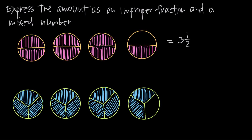I can also express the amount of pie I have as an improper fraction. An improper fraction is a single fraction where the numerator is greater than or equal to the denominator. So instead of writing three wholes and a half remaining, I can write this as one fraction. The way I do that is by looking at the number of halves that I have. I have two halves in this first pie — one, two halves makes a whole. So counting all the halves: one, two, three, four, five, six, and seven. I have seven halves of pie remaining.